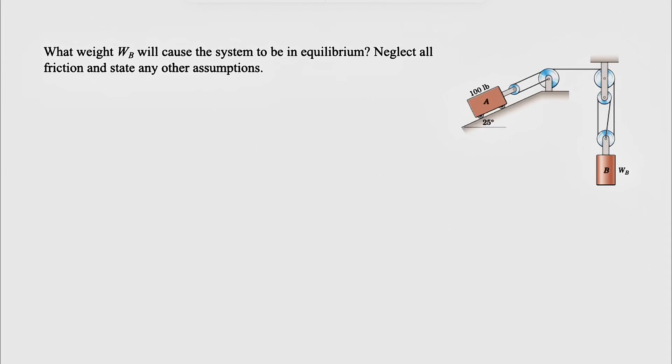Alright guys, let's see how we can solve the question from the third chapter of the Miriam textbook engineering mechanics. In this one we need to figure out what weight W_B will cause the system to be in equilibrium. We can neglect all the friction and state any other assumptions we're going to have in this question.